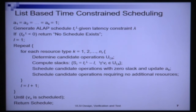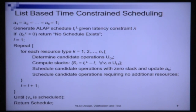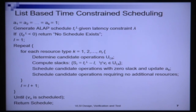We recompute slacks at each time step because slacks change: for unscheduled operations not yet allocated, as l increases, T_i(L) minus l decreases, so slacks reduce. We schedule operations with 0 slack, update a_k, then schedule operations requiring no additional resources. This continues until all operations in the graph have been scheduled. This is the list scheduling-based heuristic strategy for time constraint scheduling. With this we come to the end of module 2 of lecture 5.